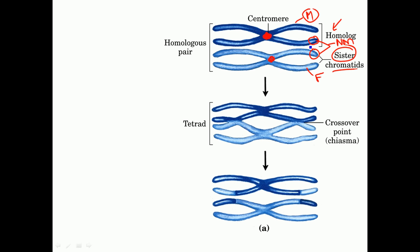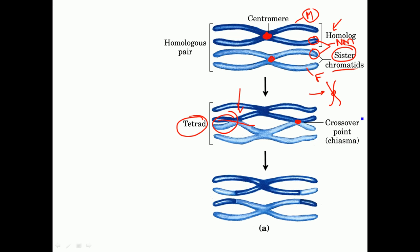Non-sister chromatids have genetic differences because they come from different origins, which is why segment swapping occurs between them. During swapping, the chromosomes must be properly aligned, and the structure they produce — because four chromatids are interacting (two from mother, two from father) — is called a tetrad. The specific chi-like structure formed is called a chiasma, and the exact point where both chromosomes break apart and rejoin is the crossover point, located in the middle of the chiasma.